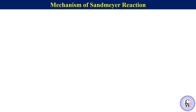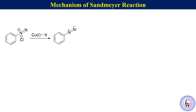Coming to the mechanism, benzene diazonium chloride reacts with copper-1 salt via single electron transfer from copper to the nitrogen of the diazonium group. By this process there is generation of a benzene diazonyl radical, chloride ion, and copper-2 ion with X attached to it.